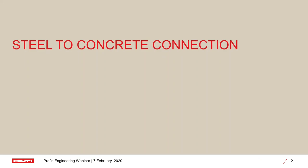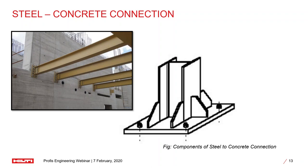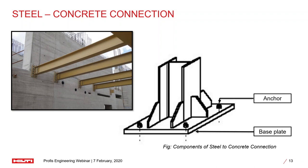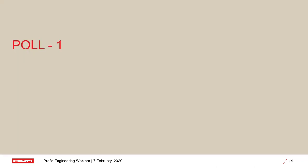Now let's talk about a steel to concrete connection. This is a typical connection where a beam is connected to an RCC wall. The different components include the base plate, anchors, steel profile, welds connecting steel components, and in some cases stiffeners. So far Hilti has been supporting you with anchor designs. We'd like to understand how you're designing the other components through a poll.